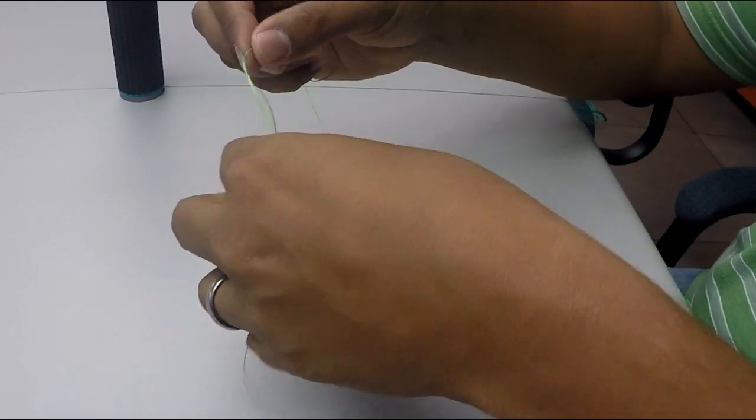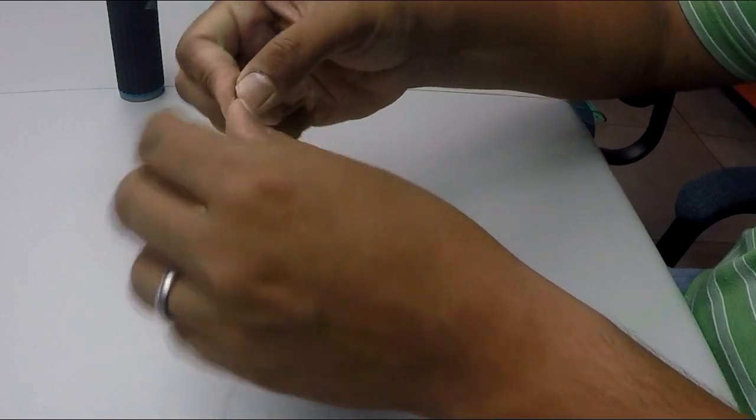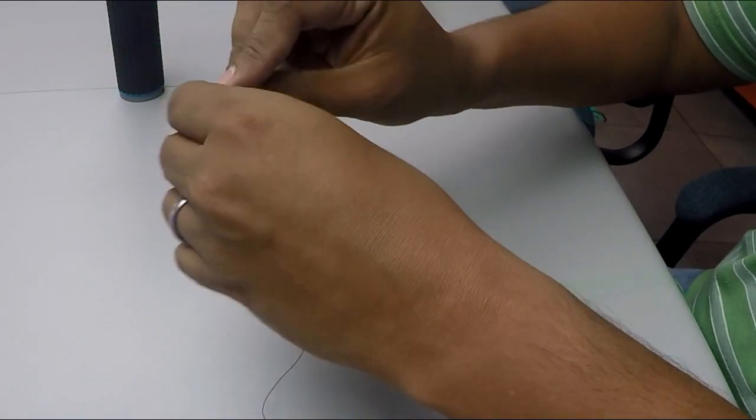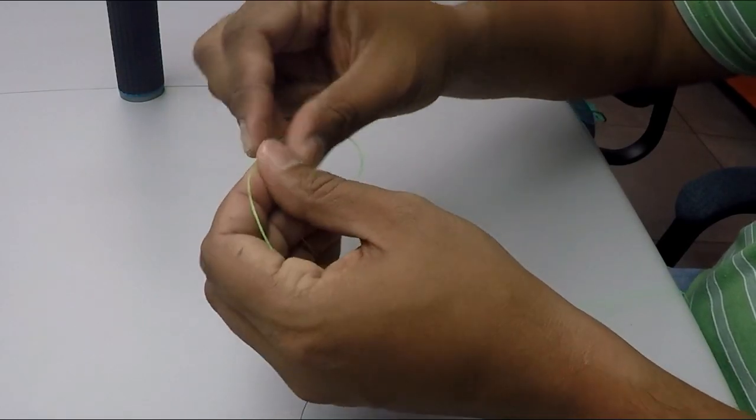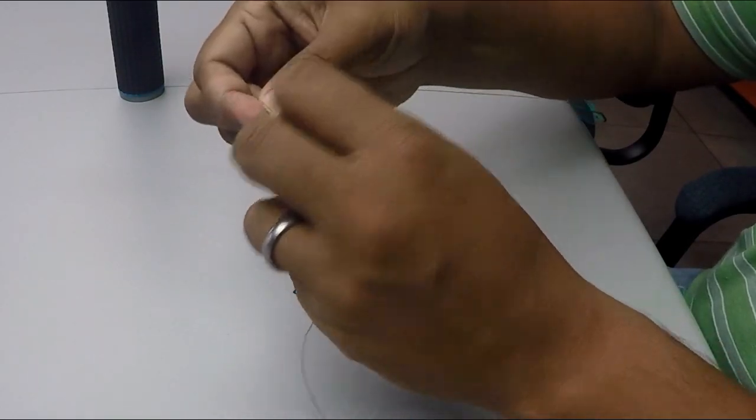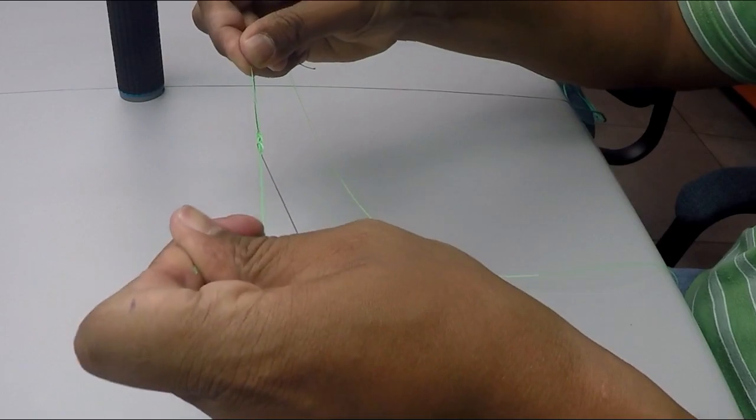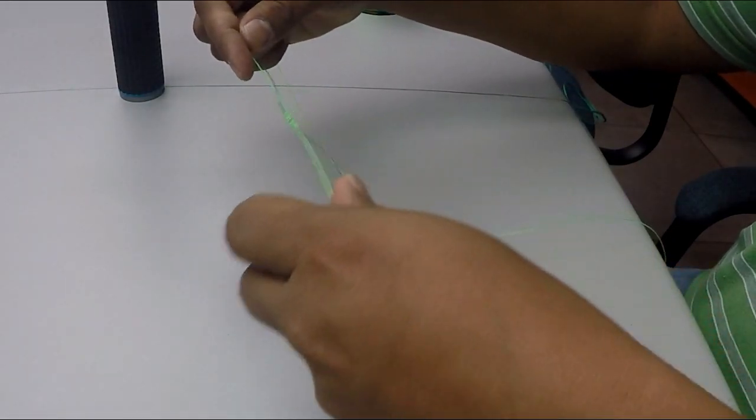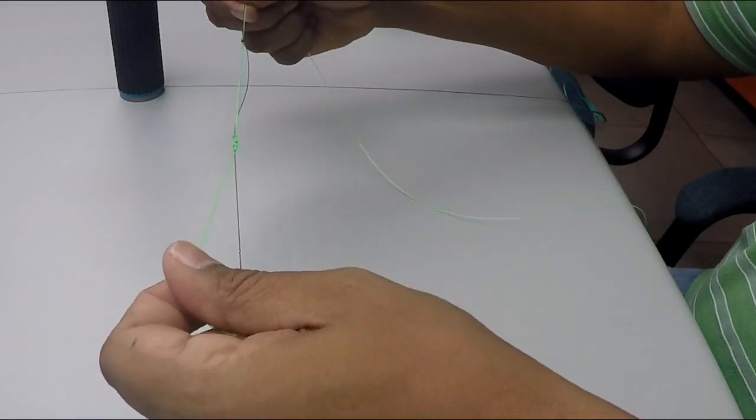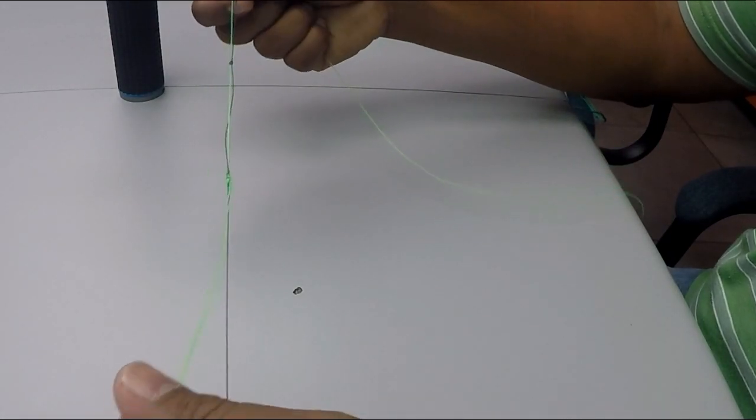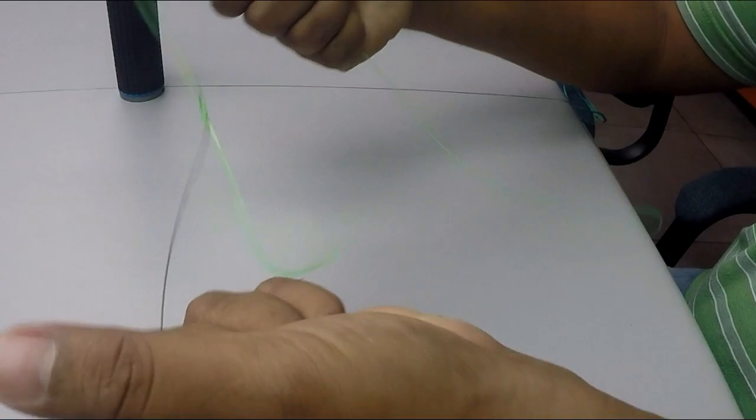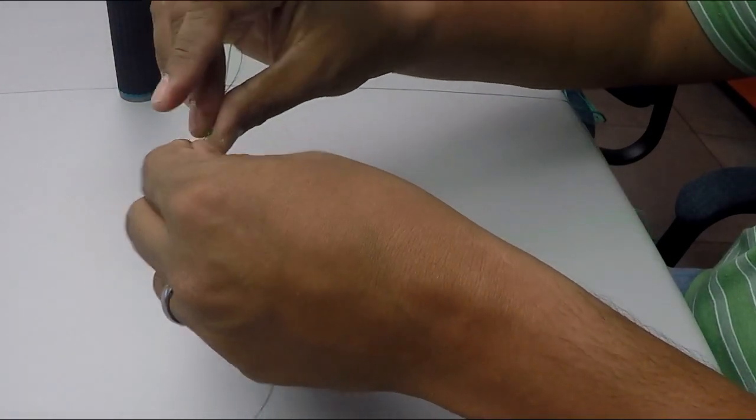Now the same thing. Come from this side. You make the circle. There you have the circle. And you go around. One, two, three, four, five. And you pull it together. The green is quite visible to see. And then there you have it. Two knots on both sides.